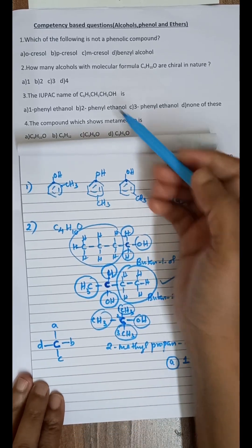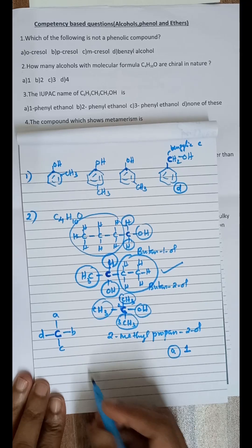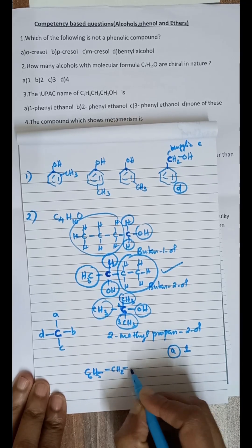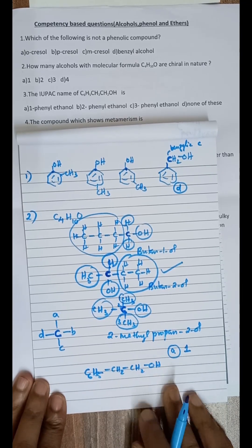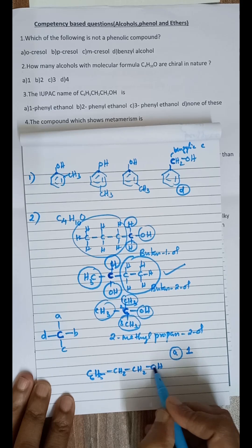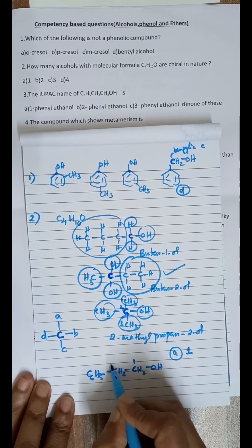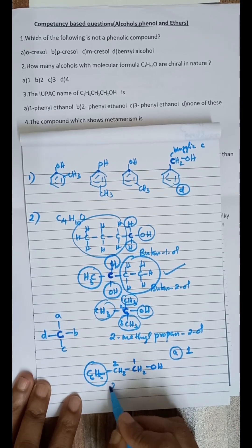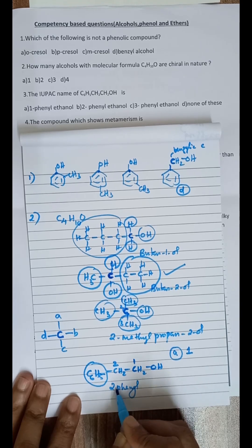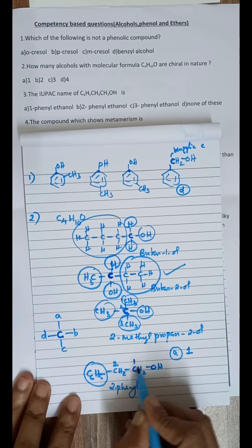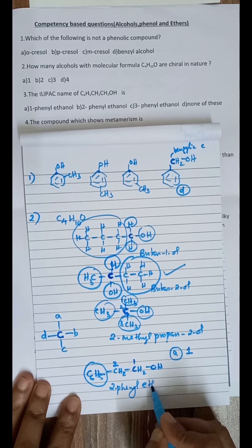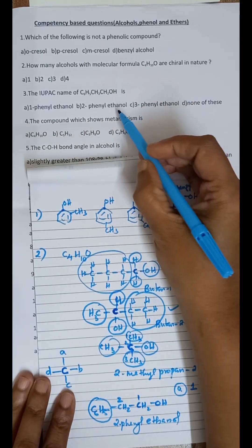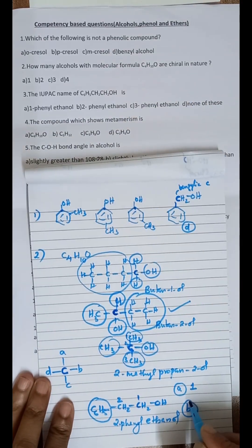Question number 3: the IUPAC name of C6H5CH2CH2OH. The OH group is attached to the first carbon, and the second carbon is connected to the phenyl group. Since there are two carbon atoms in the chain, the parent chain is ethanol, and the phenyl group is at position 2. So the name is 2-phenylethanol, and option B is the answer.